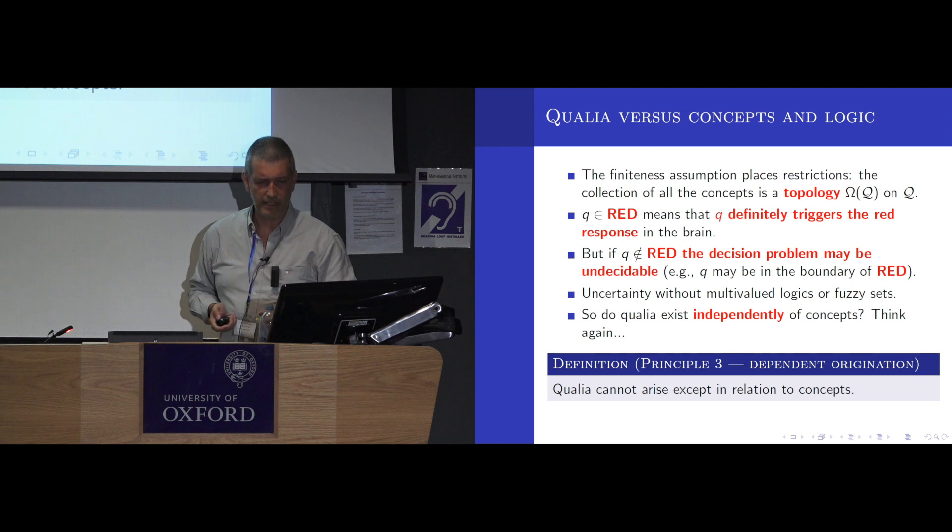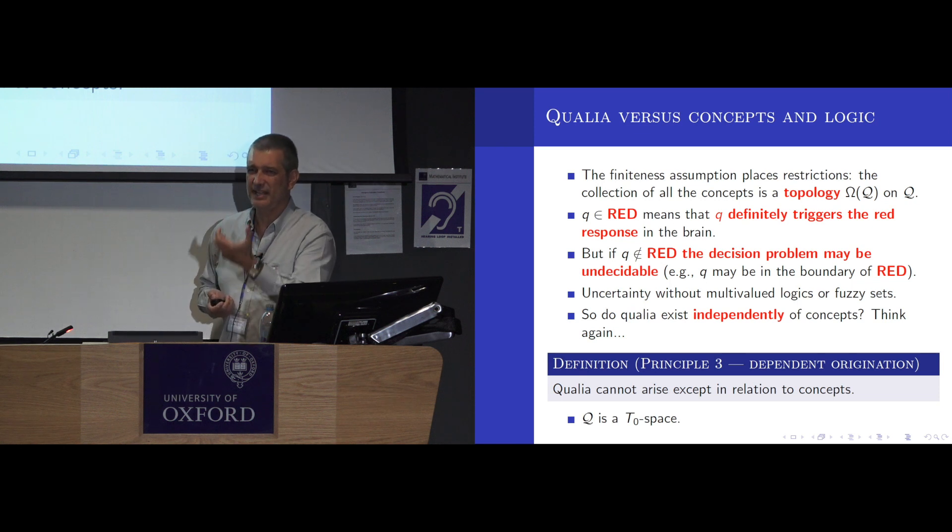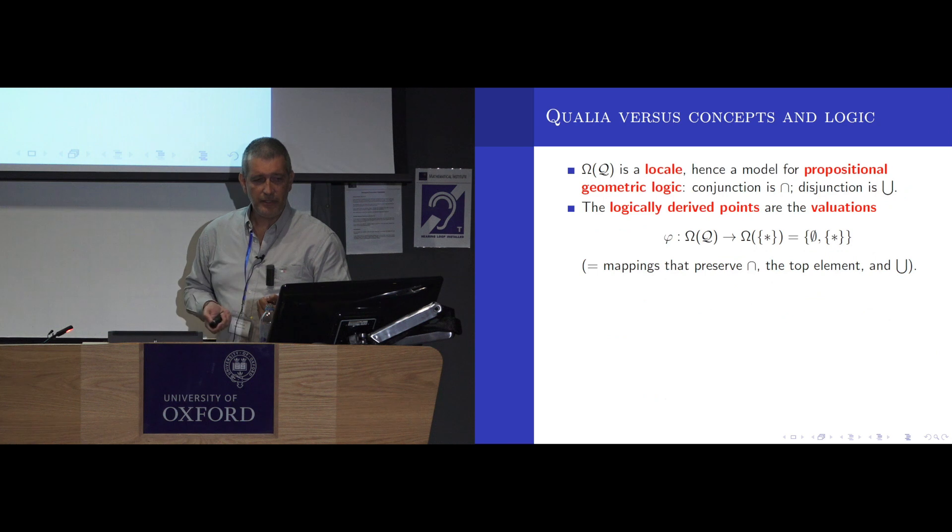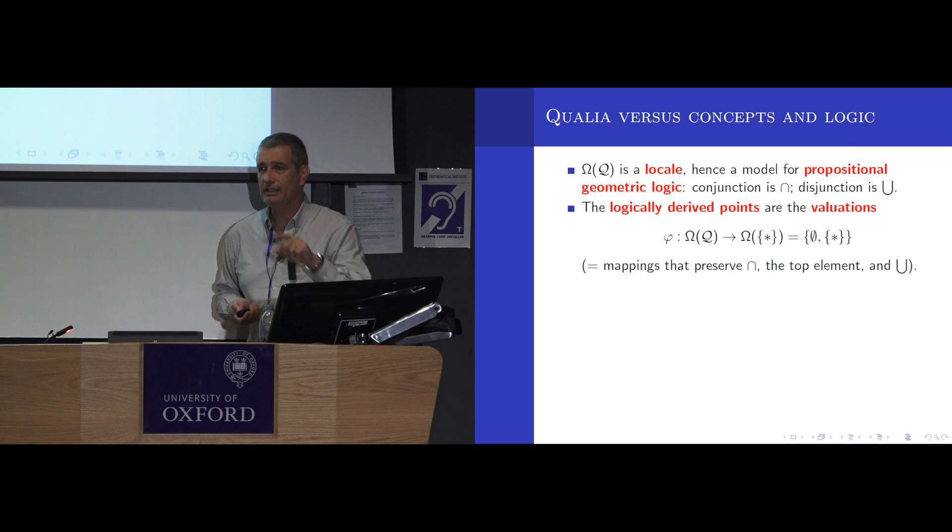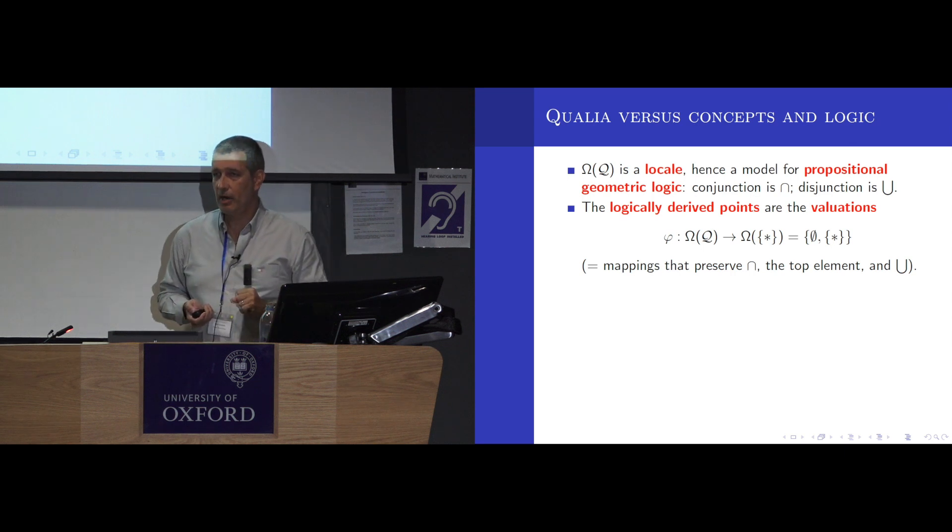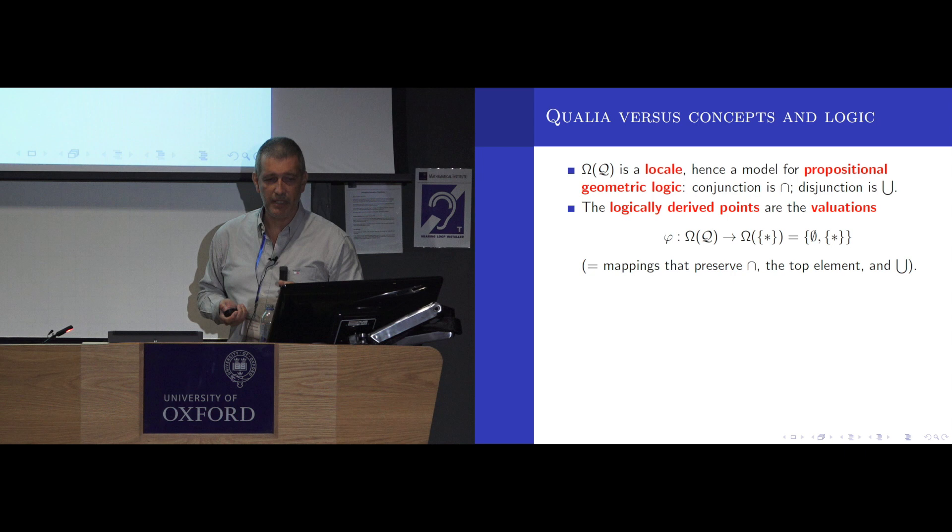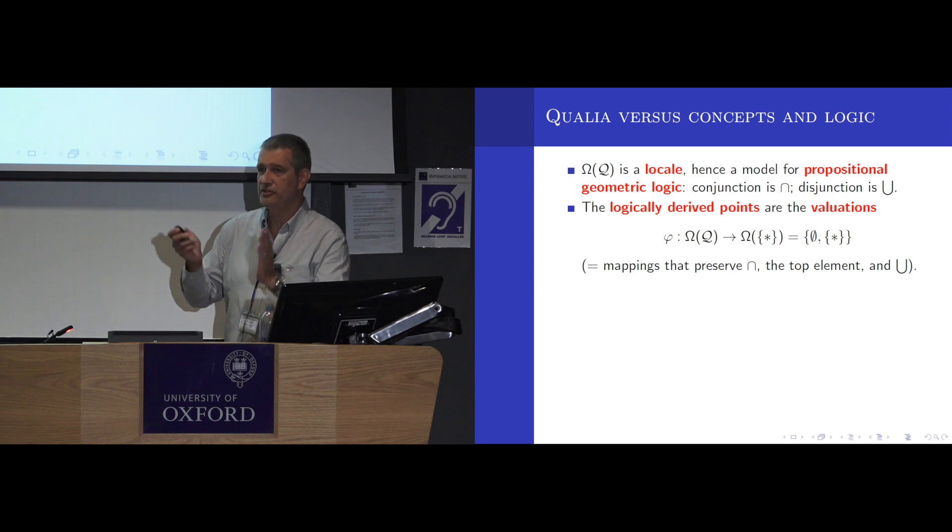Well, mathematically, this implies that Q should be a T0 space. If you have two qualia which belong to exactly the same concepts, well, then there's no sense in saying that they are different experiences. They should be the same. Another aspect of this is that the topology of any space is what one calls a locale. That's a complete lattice satisfying a simple distributivity property. That can be regarded as a model of a propositional logic called geometric logic, whose logic connectives are finite conjunctions and arbitrary disjunctions. So there's an asymmetry there.